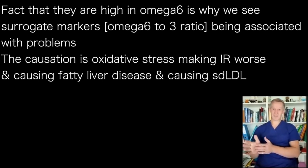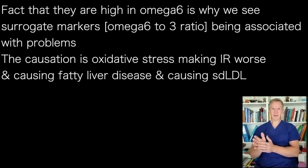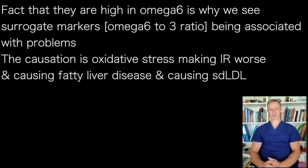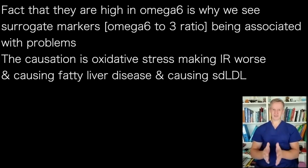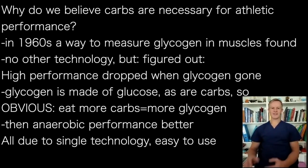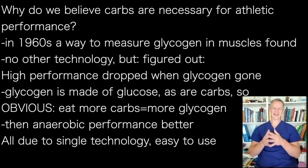The fact that seed oils are high in omega-6 is why we see surrogate markers like the omega-3 to omega-6 fatty acid ratio in red blood cells associated with problems. But that's an association. The causation happens via oxidative stress — oxidative stress making insulin resistance worse, causing fatty liver disease, and contributing to small dense LDL. Oxidative stress is the core problem.